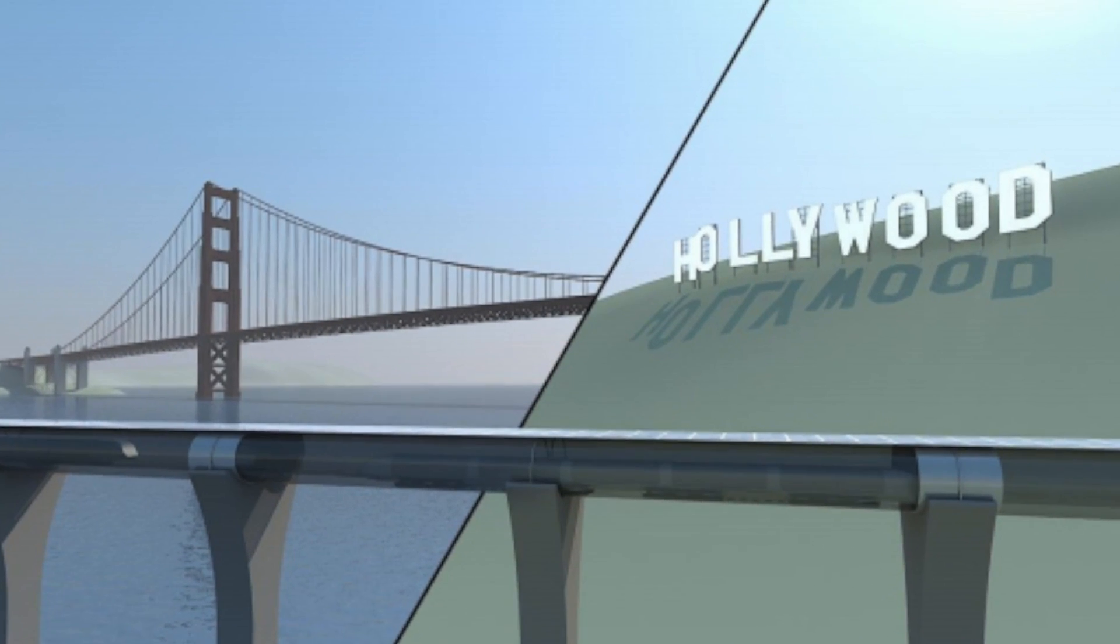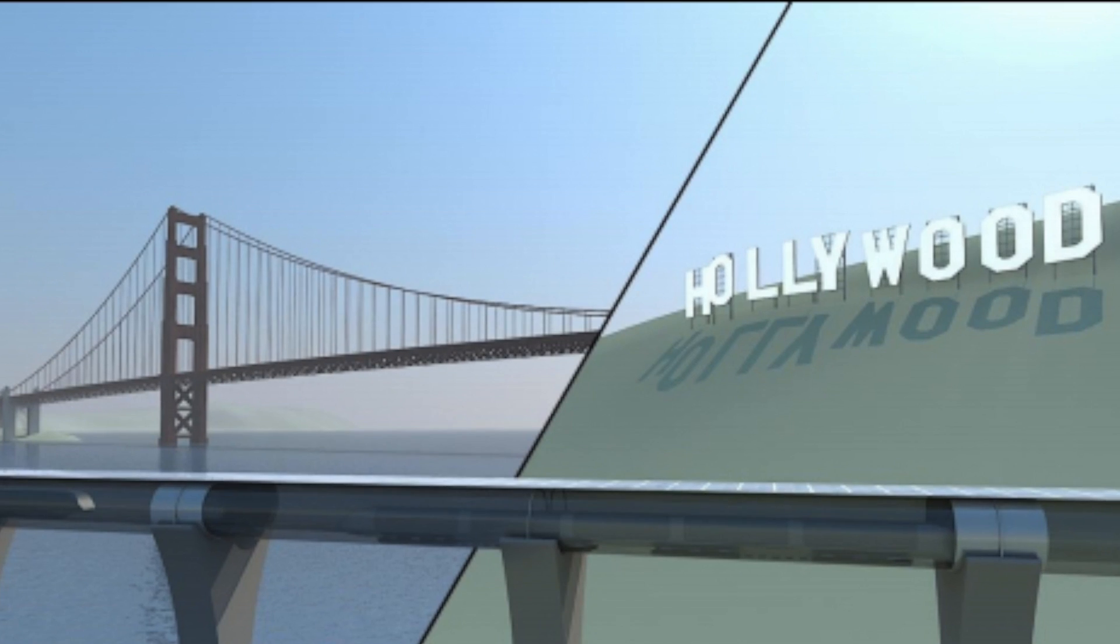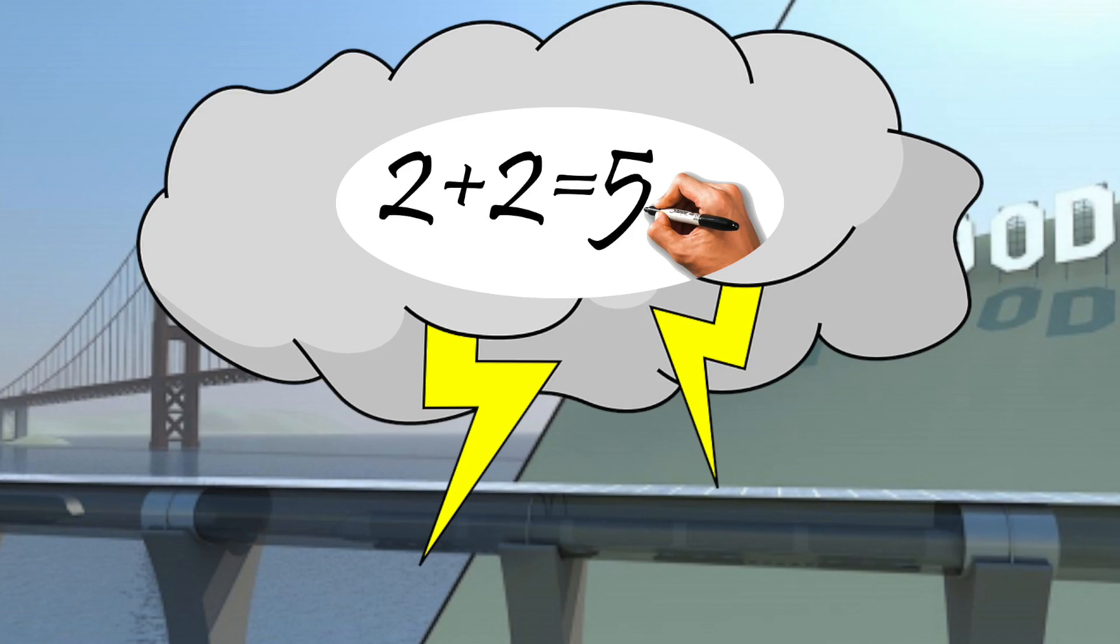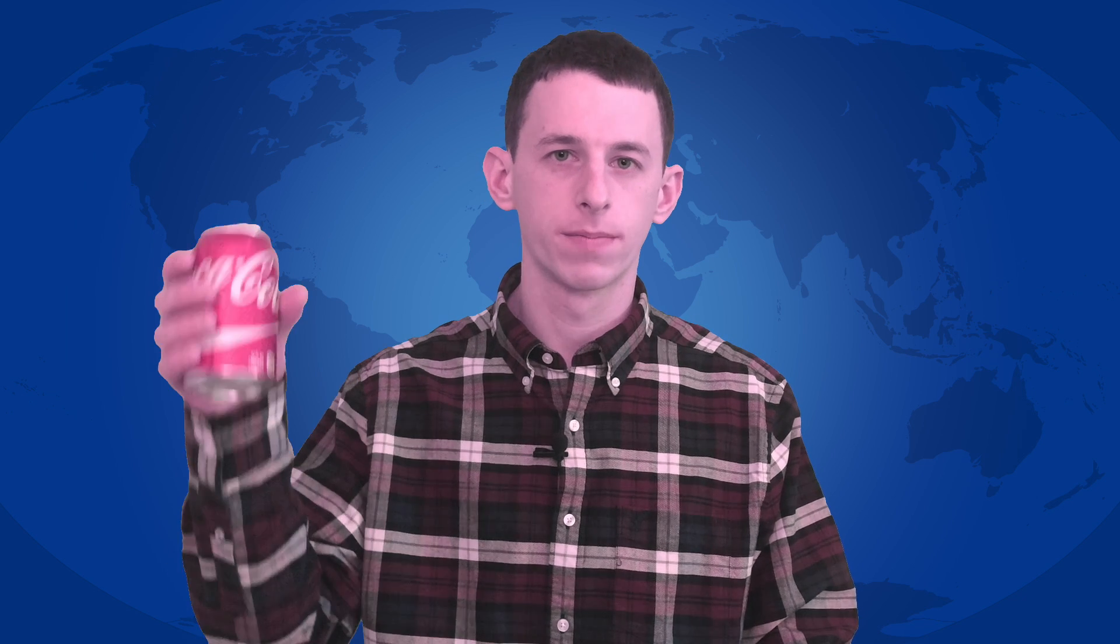Some people claim that it would be the safest form of transportation, because it's immune to weather and human error. Others see it as a target for terrorism. One of the most concerning dangers is tube implosion.